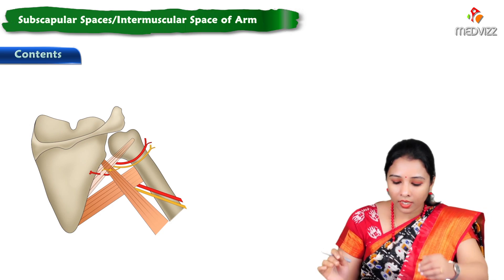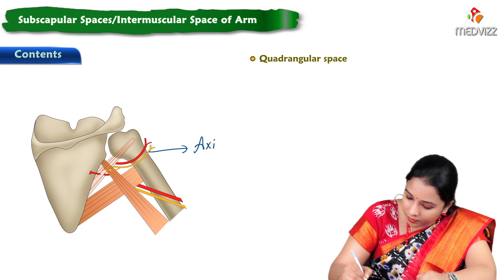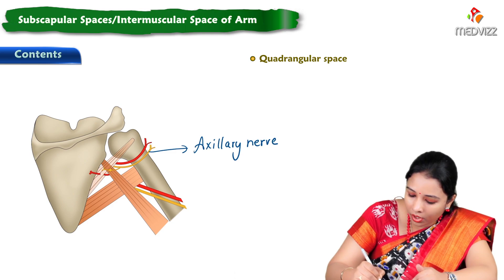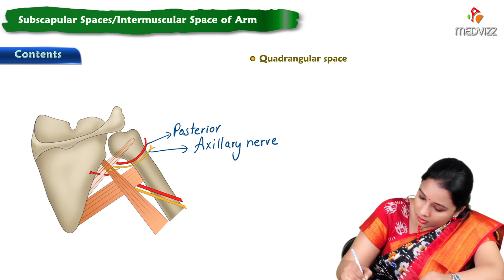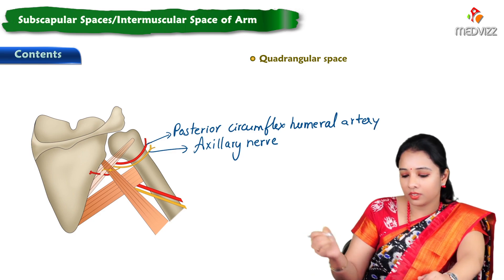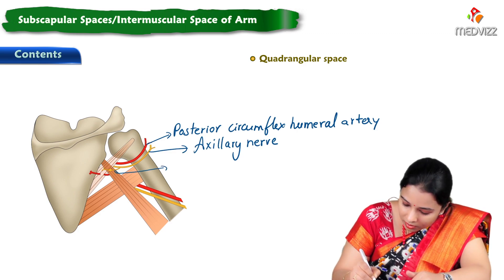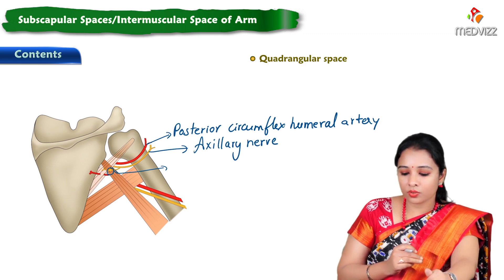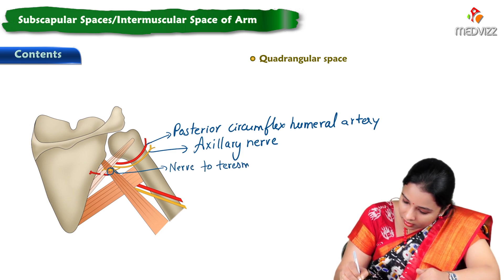Now let's see the contents. The contents of the quadrangular space include an artery and a nerve. The nerve is the axillary nerve, which winds around the surgical neck of the humerus. Along with the axillary nerve, there is the posterior circumflex humeral artery. We can also see a branch given to teres minor by the axillary nerve within the quadrangular space, along with a pseudoganglion associated with the axillary nerve. So the nerve to teres minor is also present here.